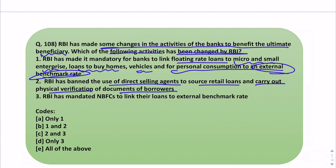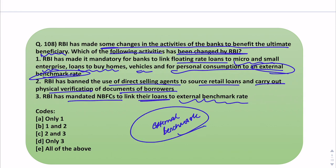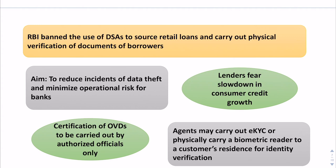The third statement says RBI has mandated NBFCs to link their loans to the external benchmark rate. RBI has mandated banks to link their floating rate loans — home loans and auto loans — to the external benchmark from October 1, 2019. So the first statement is correct. Regarding direct selling agents, let's discuss this further.